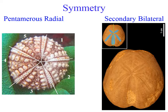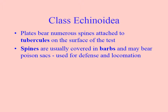You can see the secondary bilateral symmetry of a heart urchin. You can still see the areas where the tube feet come out — the ambulacral areas — and those tube feet are more specialized into respiratory organs rather than for movement. You can see very clearly how these things are related and still come from that pentamerous ancestor.